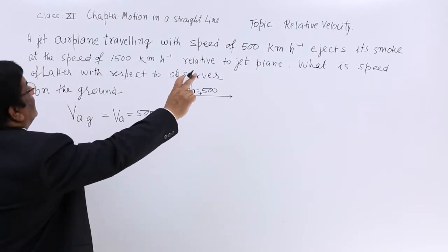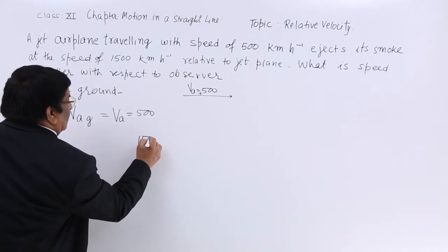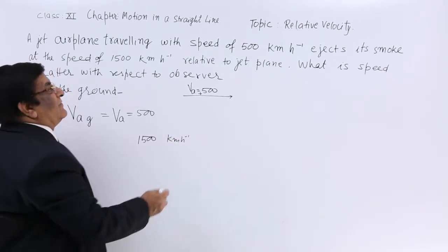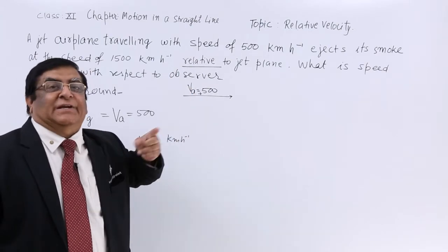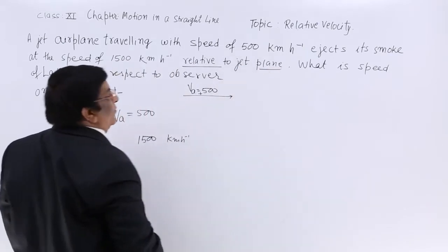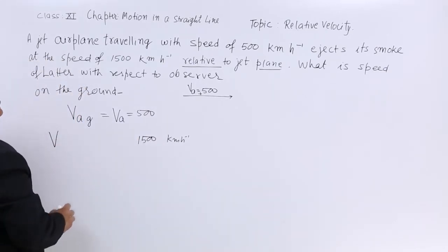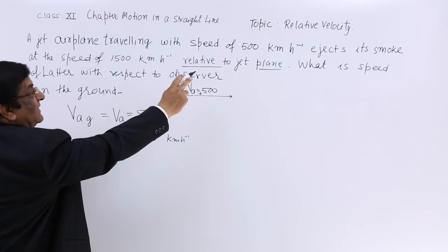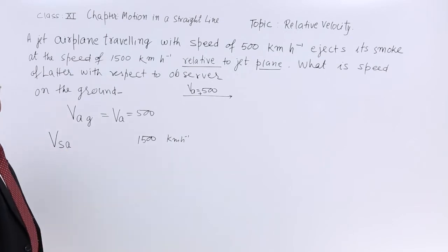Now, it ejects its smoke at the speed of 1500 kilometers per hour. What is this speed — absolute or relative? Mind the word here; it is very well mentioned: relative. This means it is relative velocity, not absolute velocity, and it is relative to the jet plane. So how can we term it? Velocity of smoke relative to jet airplane — we write it VSA. And this VSA is equal to 1500 kilometers.